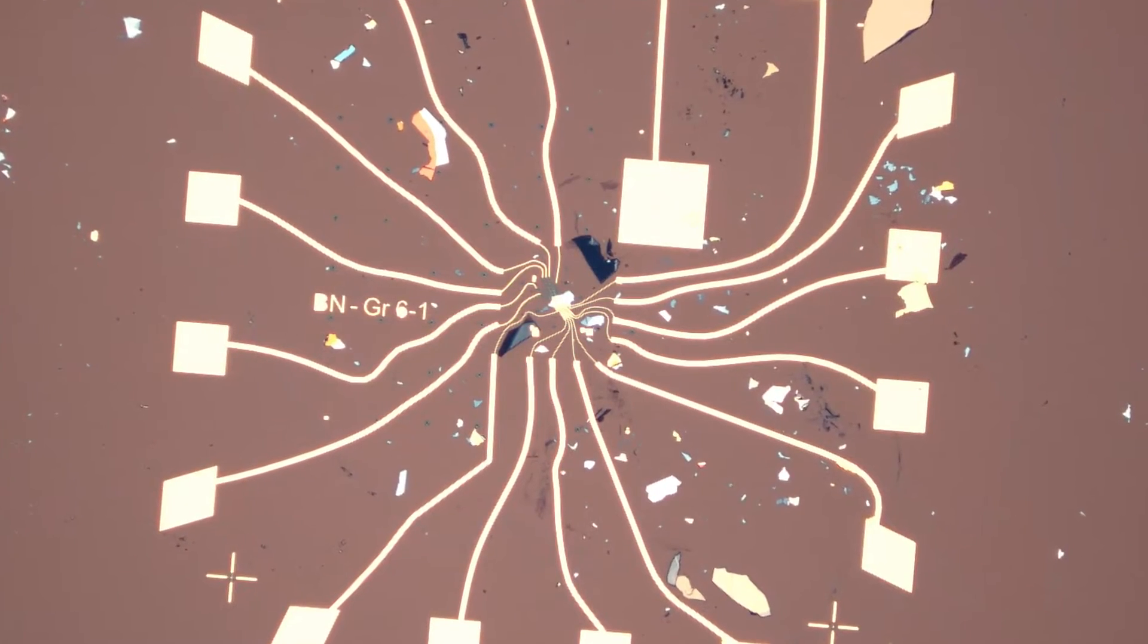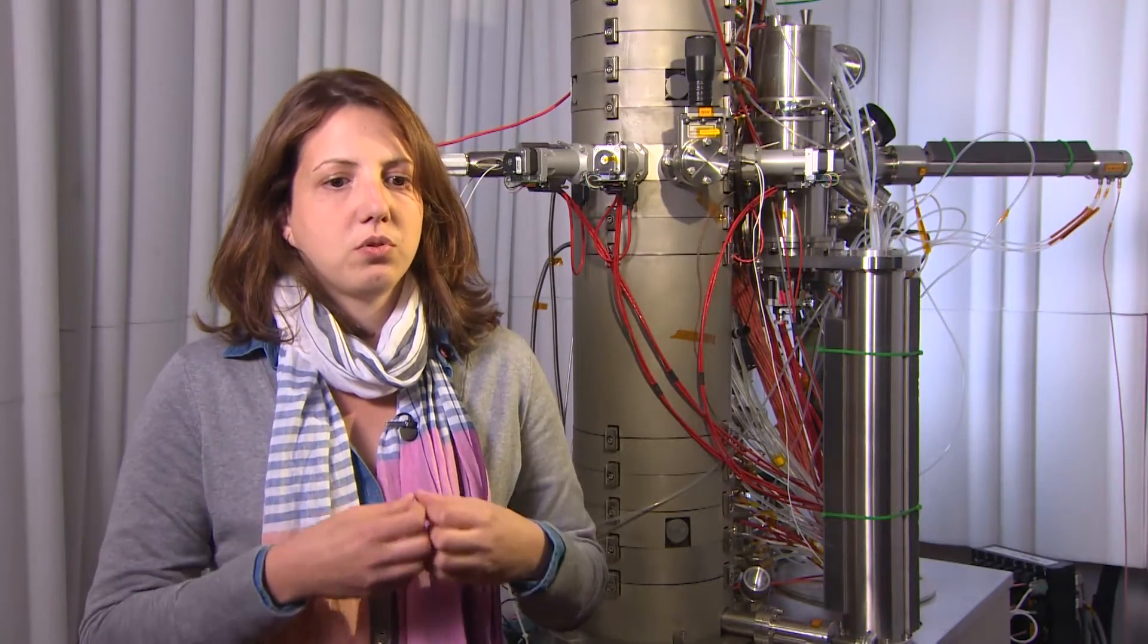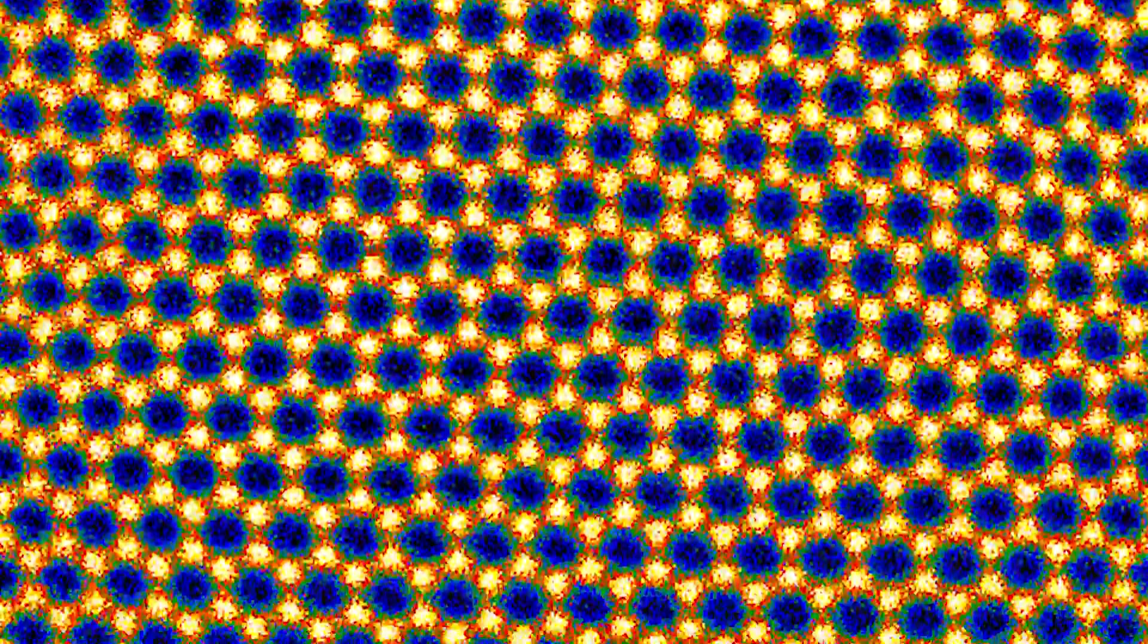SuperSTEM was the first facility to ever provide lattice images of graphene. We're also able to do atom-by-atom analysis of graphene itself, look at defects in graphene and how these affect the properties, look at dopants, single dopants and see how these bond to the graphene lattice and what effect they have on graphene properties.